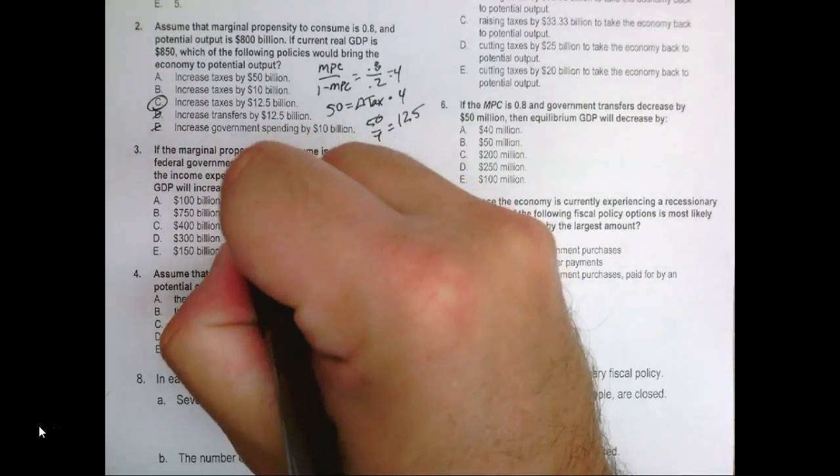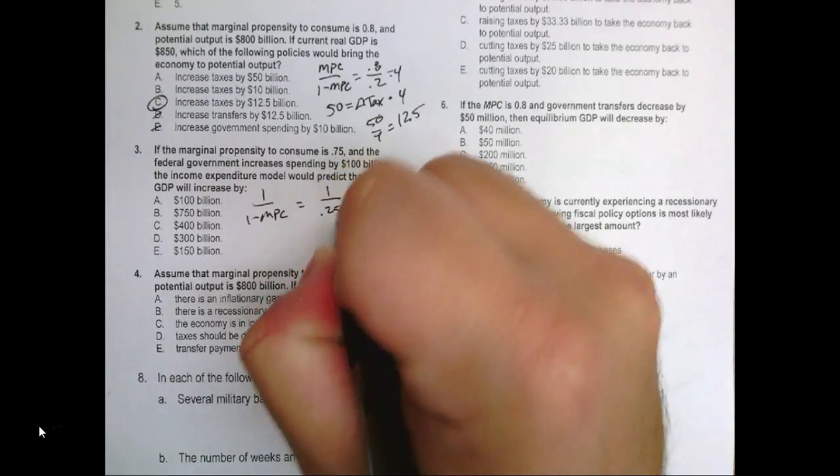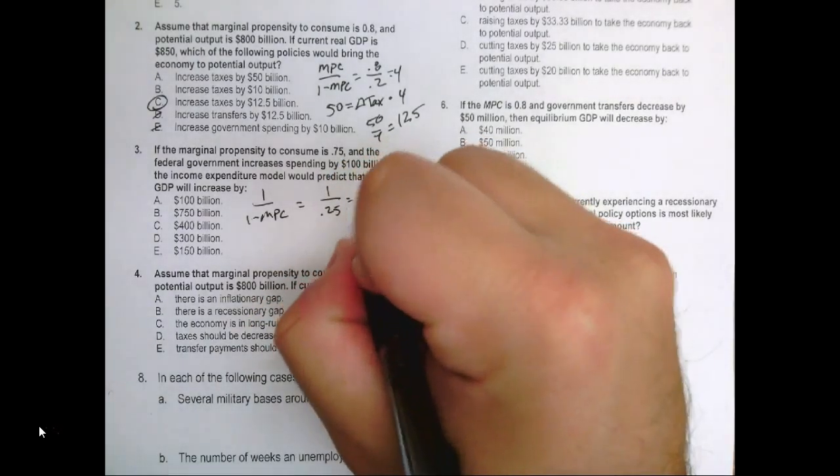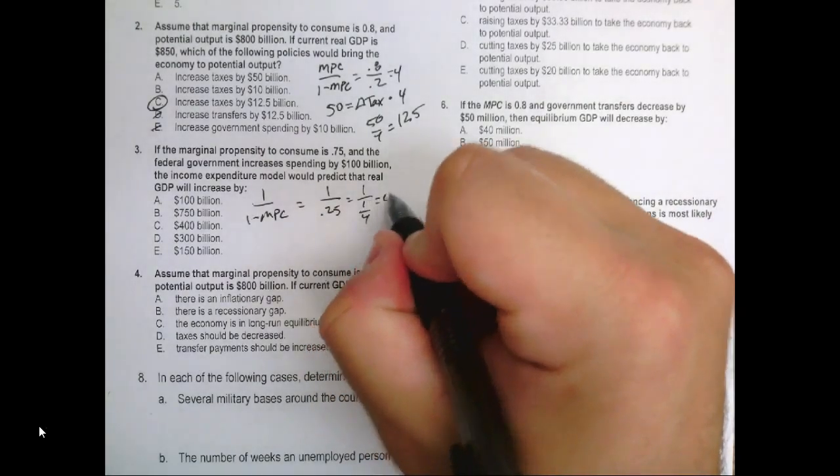We know the multiplier is 1 over 1 minus MPC. So that's going to be equal to 1 over 0.25, which is equal to 1 over 1 quarter. And basic math tells us that the multiplier is 4.